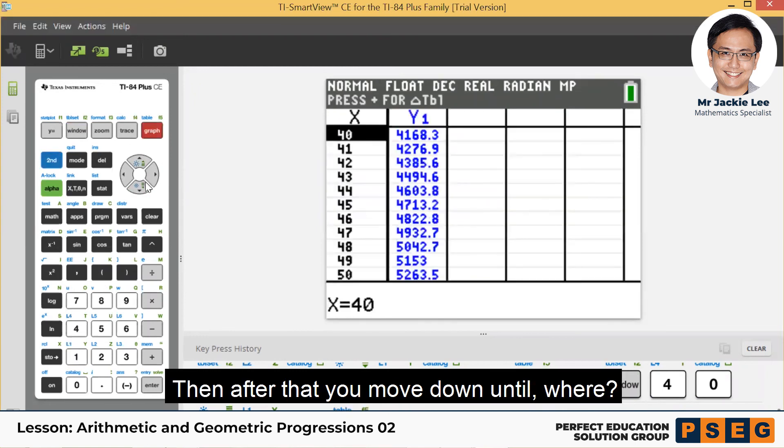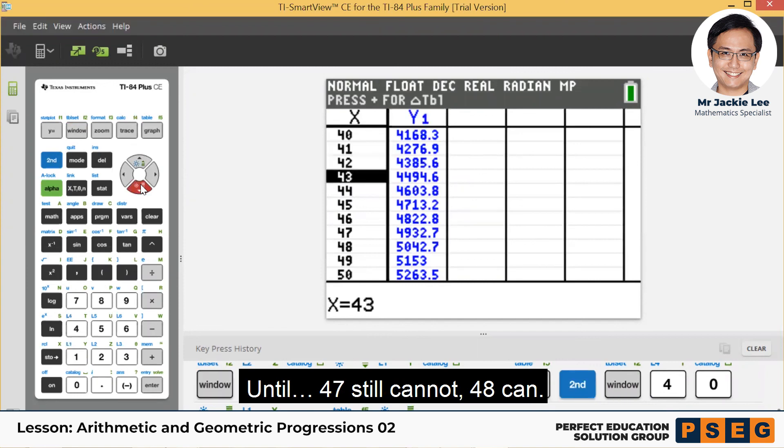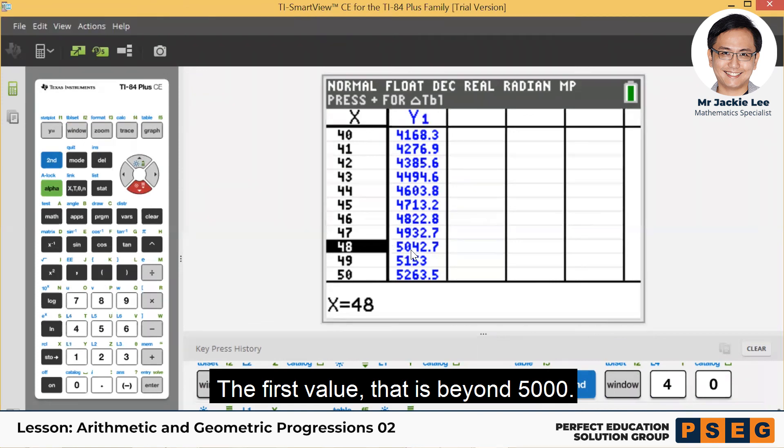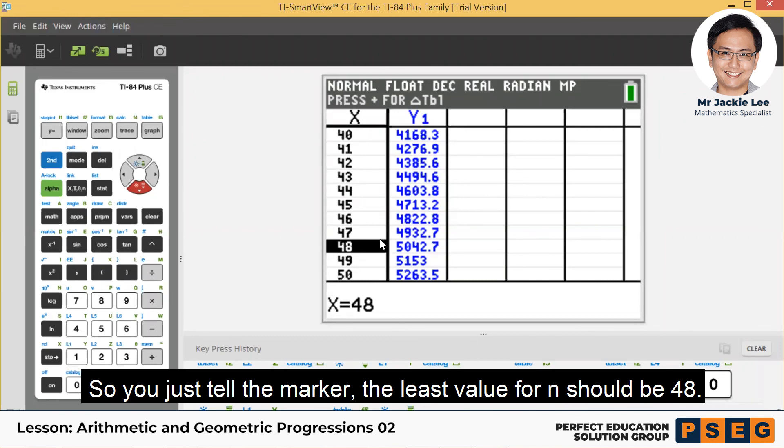Then after that you move down. Until where? Until 47 still cannot, 48 can. The first value that's beyond 5,000. So you just tell the marker that the least value for n should be 48.